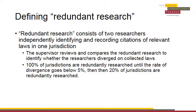Redundant research consists of two researchers independently identifying and recording citations of relevant laws in one jurisdiction. When redundant research has been completed, the supervisor should review and compare the redundant research to the original research to identify where the two researchers diverged on collected laws. One hundred percent of jurisdictions should be redundantly researched until the rate of divergence in collected laws goes below five percent. Then, only twenty percent of jurisdictions need to be redundantly researched.